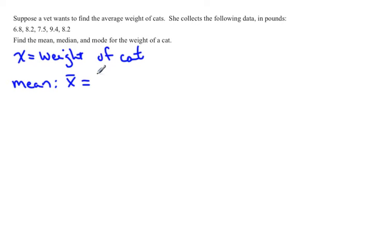To find the mean, you just add all the data values up and then divide by the number of data points there are. So in this case, we're going to add all those numbers up and then divide by five.